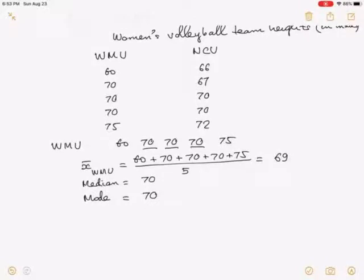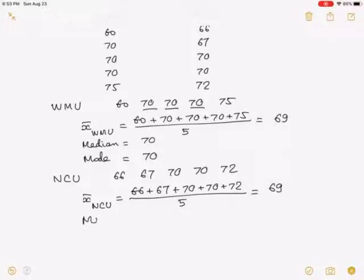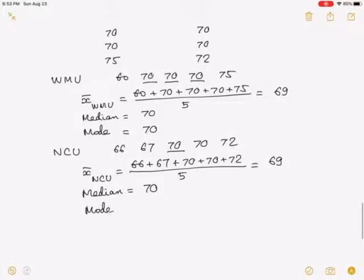Now for Northern Connecticut University, the heights in increasing order are 66, 67, 70, 70, 72. So the mean for NCU is 66 plus 67 plus 70 plus 70 plus 72 divided by 5. So you get again 69. The median, this is the median point, here it is also 70. And the mode, 70 are repeated twice, so the mode is also 70.